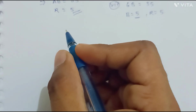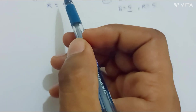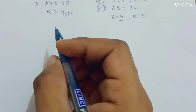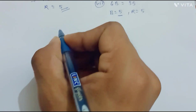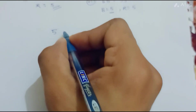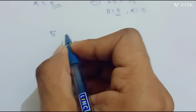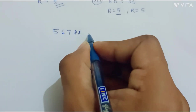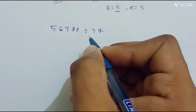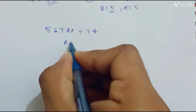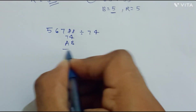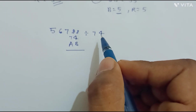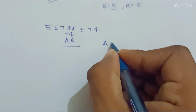Welcome back. In this video we are taking another example for the Urdhva-Tiryak Sutra of division. Let us understand this concept better for the next example which might come in your examination and which you will find a bit harder even after knowing the concept from the previous video. Let us take the example: 56788 divided by 74. In this case, if we take any a, b and multiply with 74, it won't work because the number is too large, so the answer will be in the form of a, b, and c.